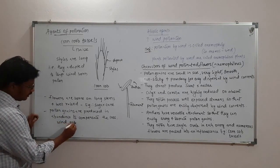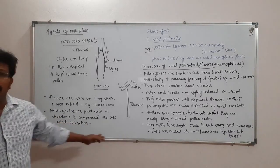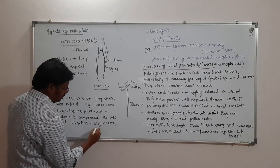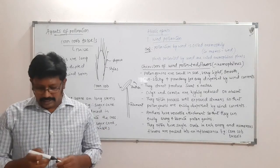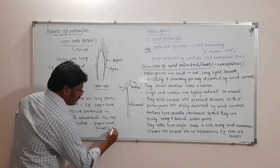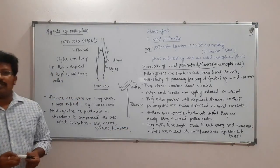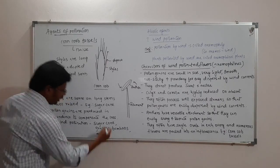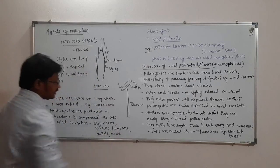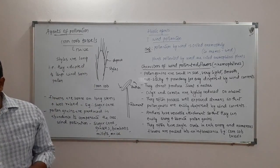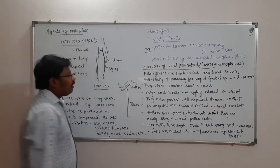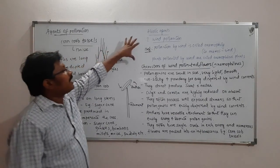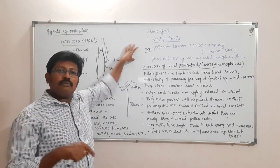Wind pollination is very common in sugarcane, grasses, bamboos, millets, maize, and paddy. In all these plants, pollination takes place by wind. That covers the abiotic agent of wind pollination. Next, we will study about water pollination.